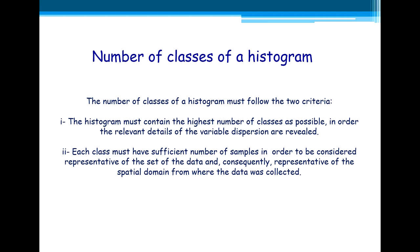Second, each class must have sufficient number of samples in order to be considered representative of the set of the data and consequently, representative of the spatial domain from where the data was collected. That's why they are contradictory. So in the balance of these two criteria, you should choose the appropriate number of classes for your histogram.